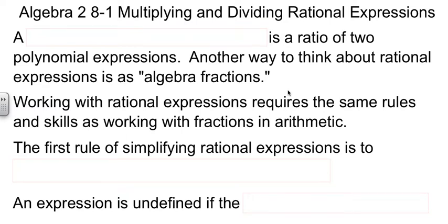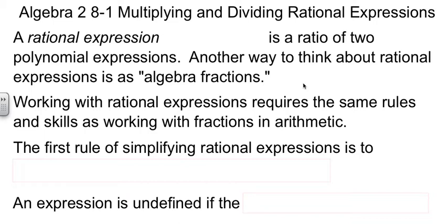This is Algebra 2, Chapter 8, Section 1, in which we will be studying multiplying and dividing rational expressions. Before we can do anything with rational expressions, we need to know what one is. A rational expression is just a ratio of polynomials — something that looks like an algebra fraction with variables in the numerator and variables in the denominator, so letters everywhere.